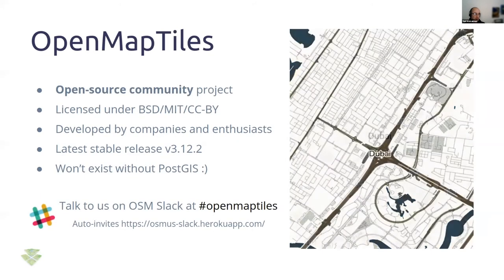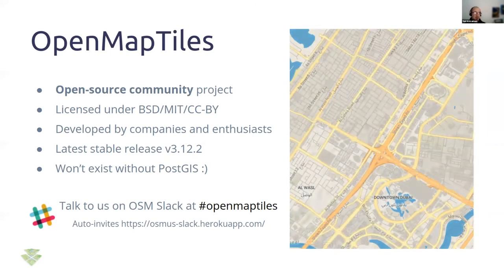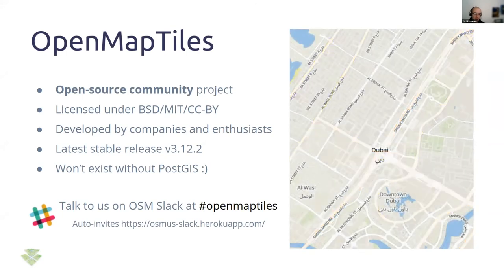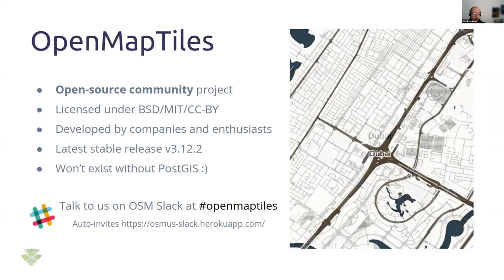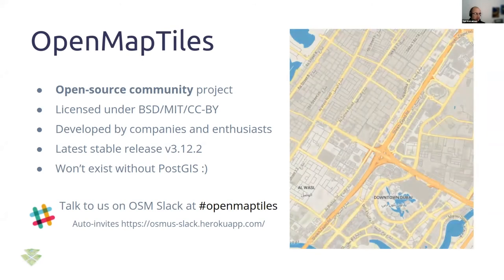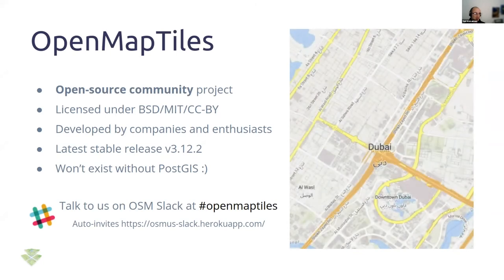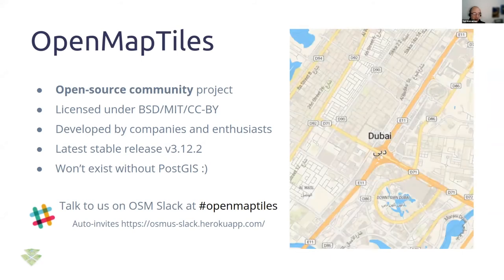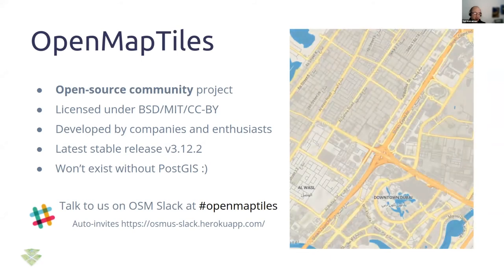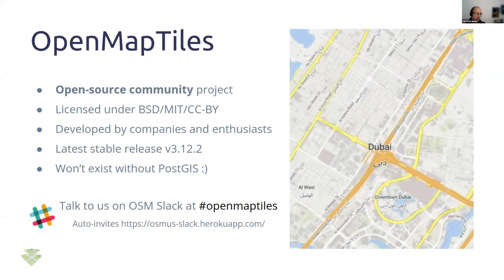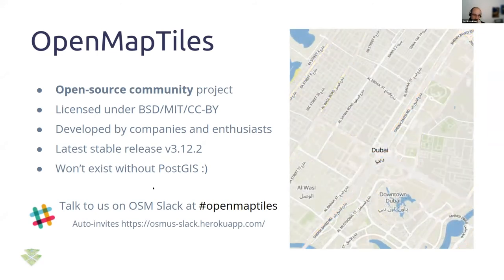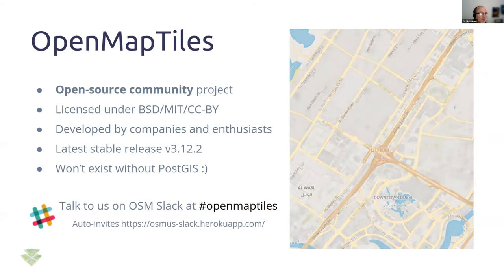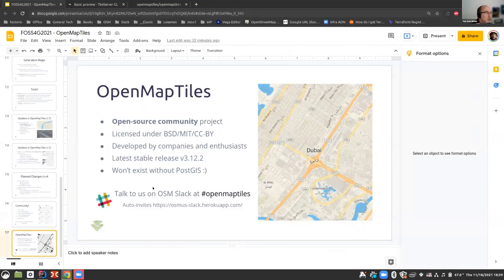That brings us to the end of the slides. OpenMapTiles is open source, community-licensed under BSD, MIT, and CC BY — highly permissive licensing. We've gotten burned by licensing in the past, so let's keep it as open as possible. It's used and developed by companies and enthusiasts, and would not have existed without PostGIS. If you want to talk to us, come to the OSM Slack — there's a URL to get yourself invited — and join the OpenMapTiles channel.